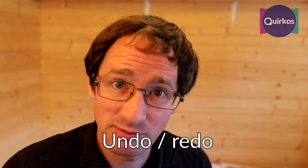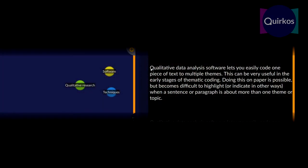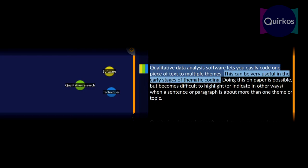It also has advantages that all software has, such as undo and redo, so you can change your mind — that's very difficult to do with paper and highlights. Once you've coded something on paper, it's very difficult to go back. You can also code one piece of text to more than one code or theme, which is easier to manage in software than with hatched combinations of different colored highlighters.